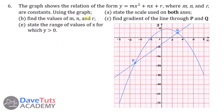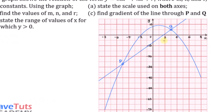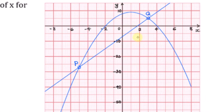We are told that this particular graph is showing a relation of the form y = mx² + nx + r, where m, n, and r are constants. Now, using the graph, first we have to state the scale used on both axes. Look at this graph critically — from one point to another, these are the tick boxes featured on the graph, and those tick boxes span just 2 centimeters on the x-axis.